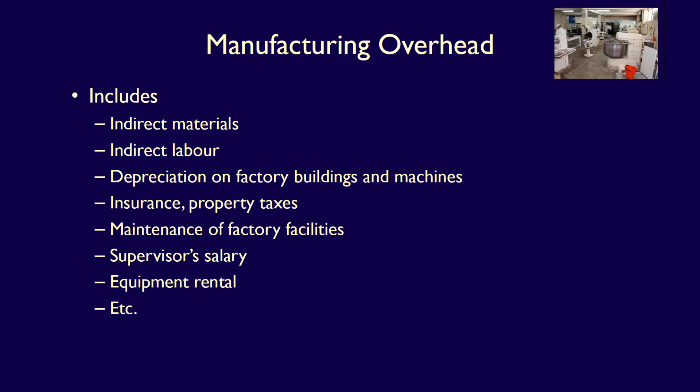Basically, if a cost is a manufacturing-related cost but cannot be classified as direct materials or direct labor, it should be considered manufacturing overhead. However, manufacturing overhead can be divided into costs which are variable and costs which are fixed.